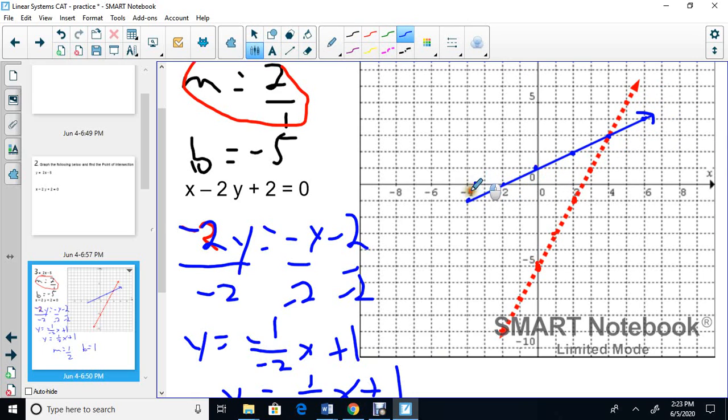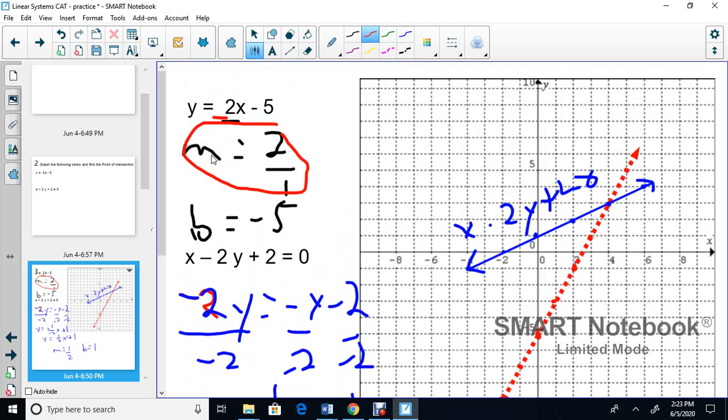Here, I'm going to label these two lines. So the blue one here, I'm going to label the blue one here as x minus 2y plus 2 equals 0. And then the red one I'll label as y equals 2x minus 5. And just remember, positive slopes go this way. And negative slopes will go that way. So if you have a negative slope, it'll go downward.